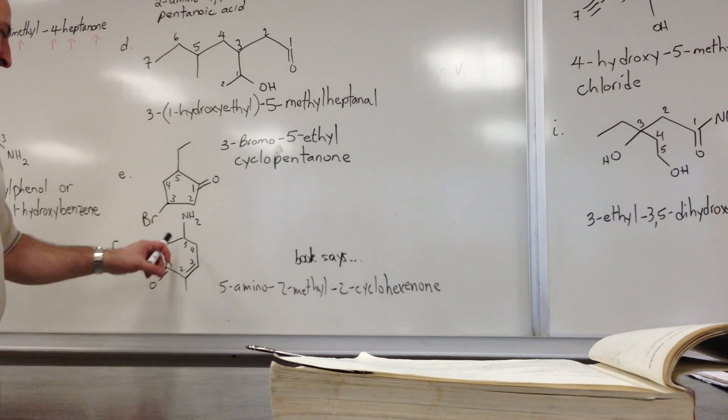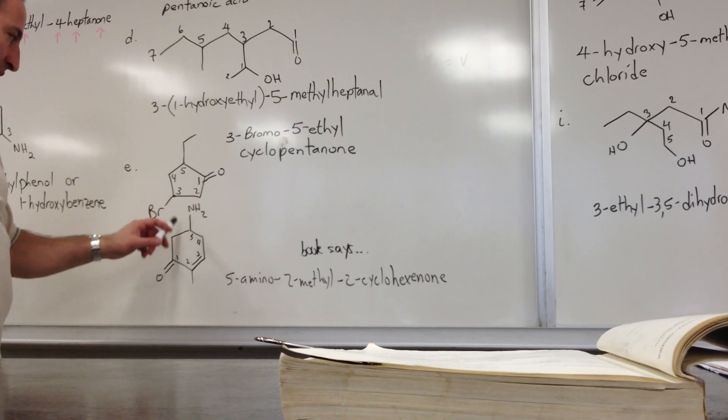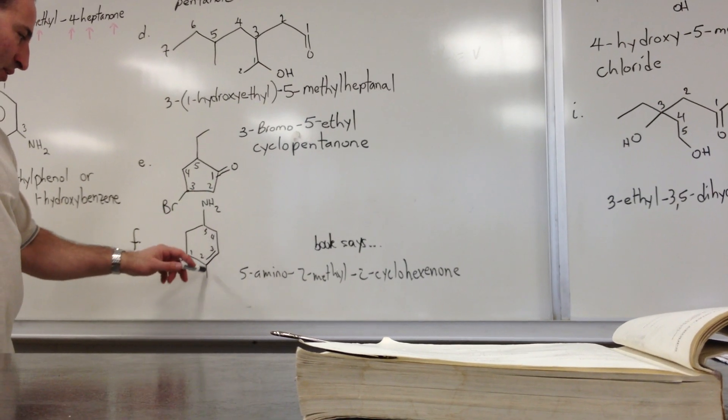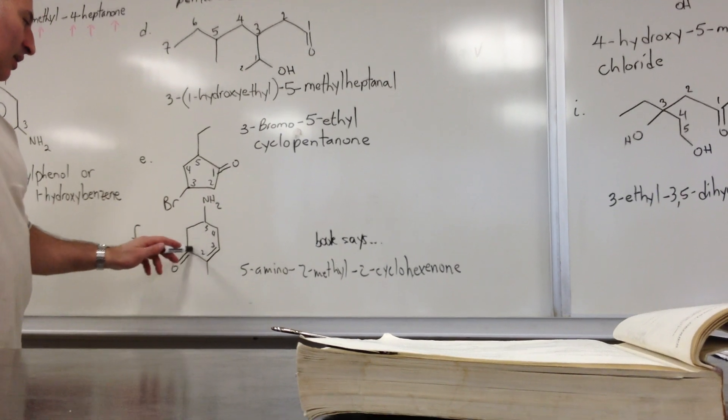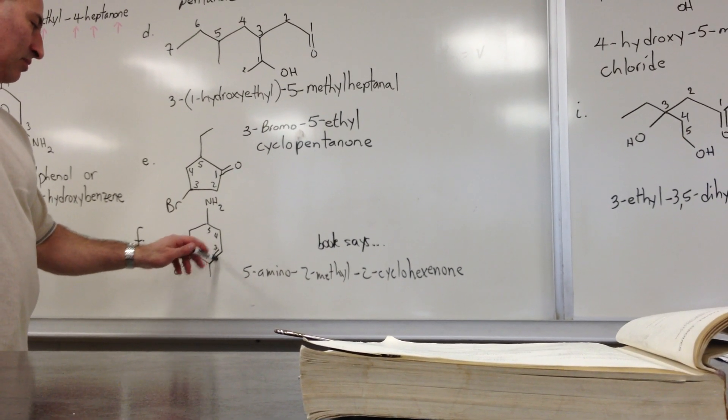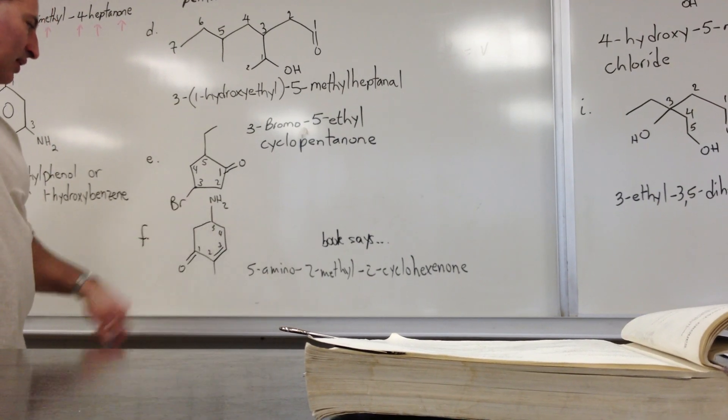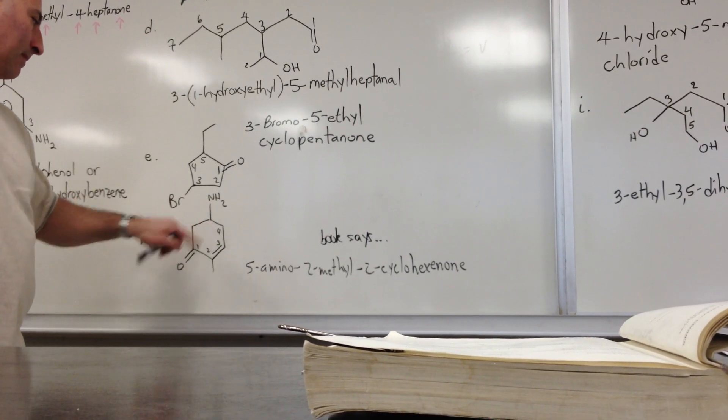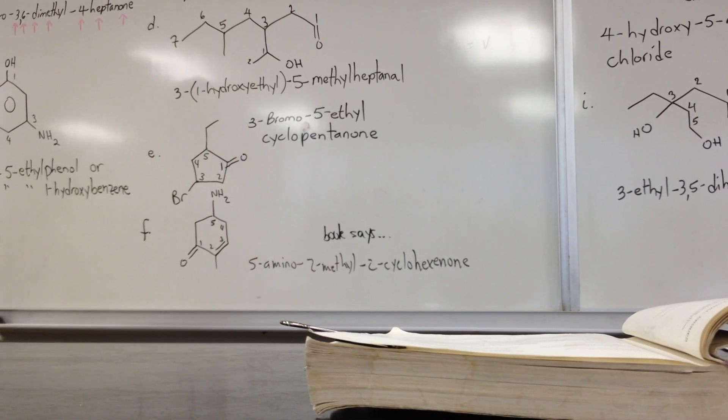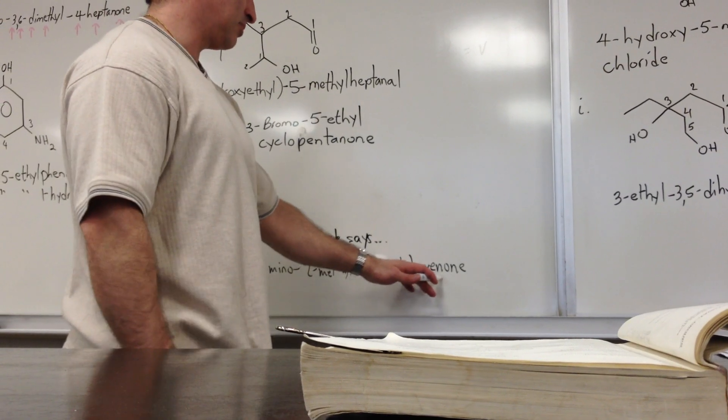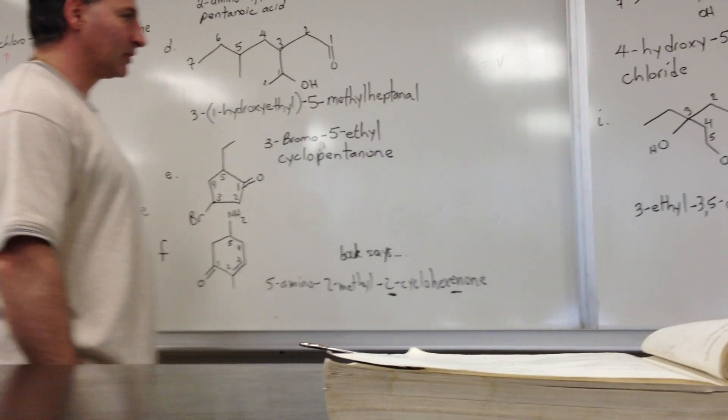This is a cyclohexenone. There was some controversy about which way we should go to numbering, because amino groups are usually higher than alkenes. But I guess when you have a chain, the double bond takes the lowest priority possible. So we call this, we numbered it this way. It comes out to be 5-amino-2-methyl-2-cyclohexenone, because of the double bond. And this tells you the position of the double bond, ketone.